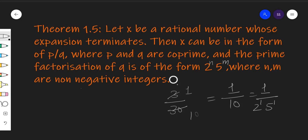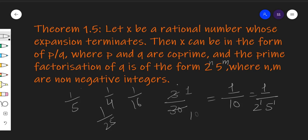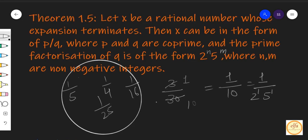जहाँ n और m दोनो non-negative integers हैं — 0 हो सकता है या फिर positive हो सकता है. अगर आप 1 by 5 लेंगे, तो भी terminate होगा. 1 by 2, 1 by 4, 1 by 16, या 1 by 25 लेंगे — यह सारे terminate होने वाले numbers हैं. तो यह हो गई आपकी Theorem 1.5.